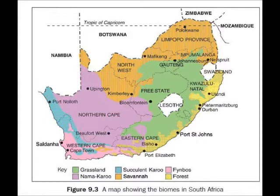A biome is a part of the biosphere and is characterized by its climate or percentage of water, including aquatic and terrestrial biomes. An ecosystem is made up of habitats and is a clearly defined place where all living organisms interact with each other and the abiotic factors around them.